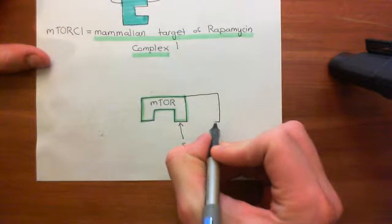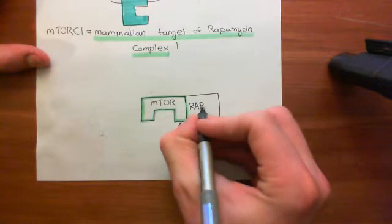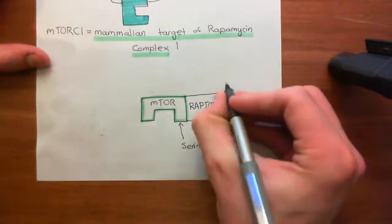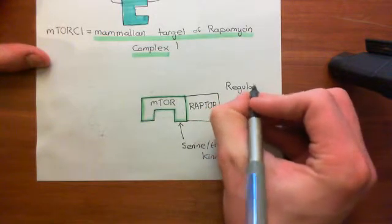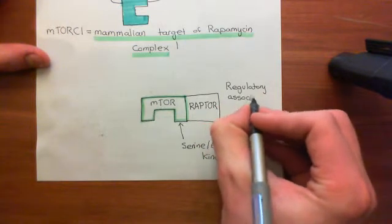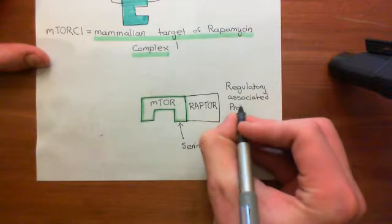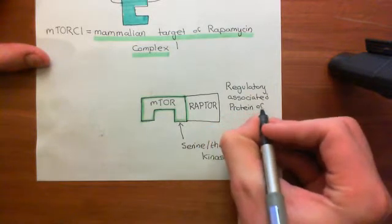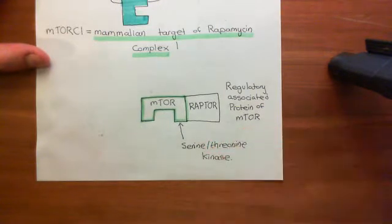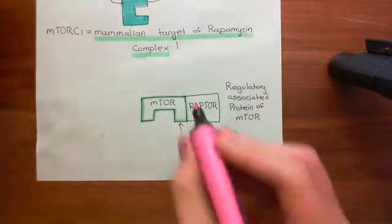First, we'll look at Raptor. Raptor stands for the regulatory associated protein of mTOR. So the R is for regulatory, the A is for associated, the P is for protein, and then TOR is taken from mTOR. So Raptor is short for the regulatory associated protein of the mammalian target of rapamycin.